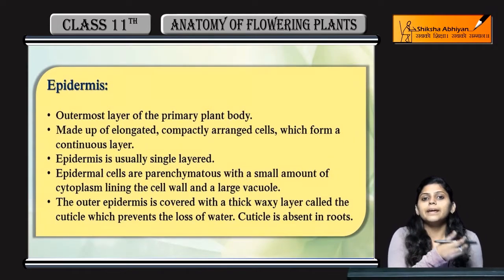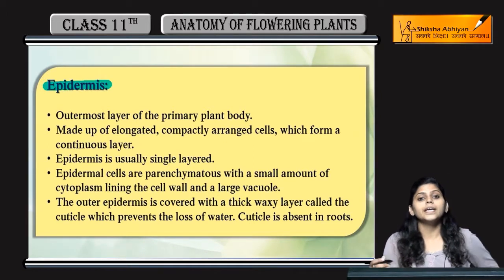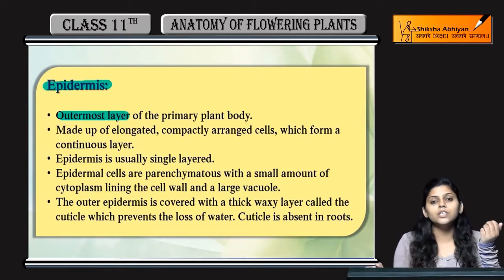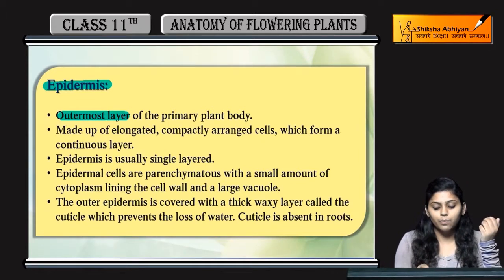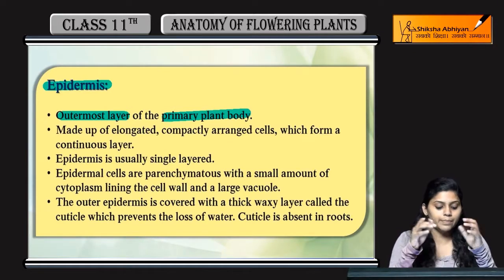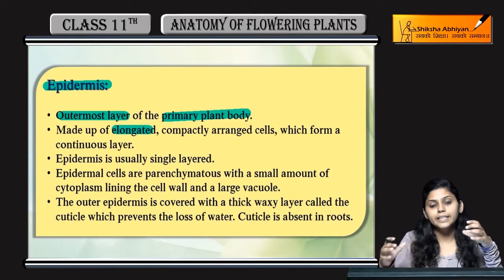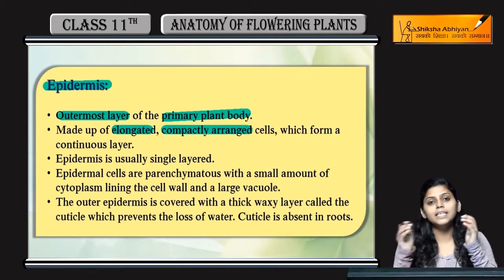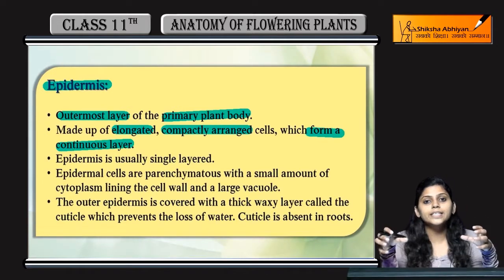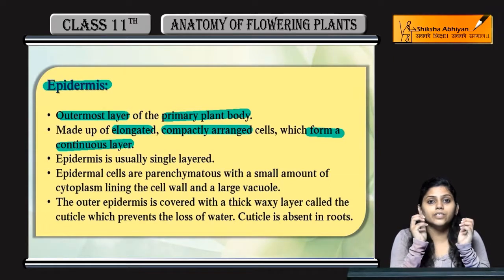Epidermal Tissue System ka pehla type hai Epidermal Cells or Epidermis. Epidermis is the outermost layer of the primary plant body — sabse bahar wali layer. It is made of elongated, compactly arranged cells which form a continuous layer.